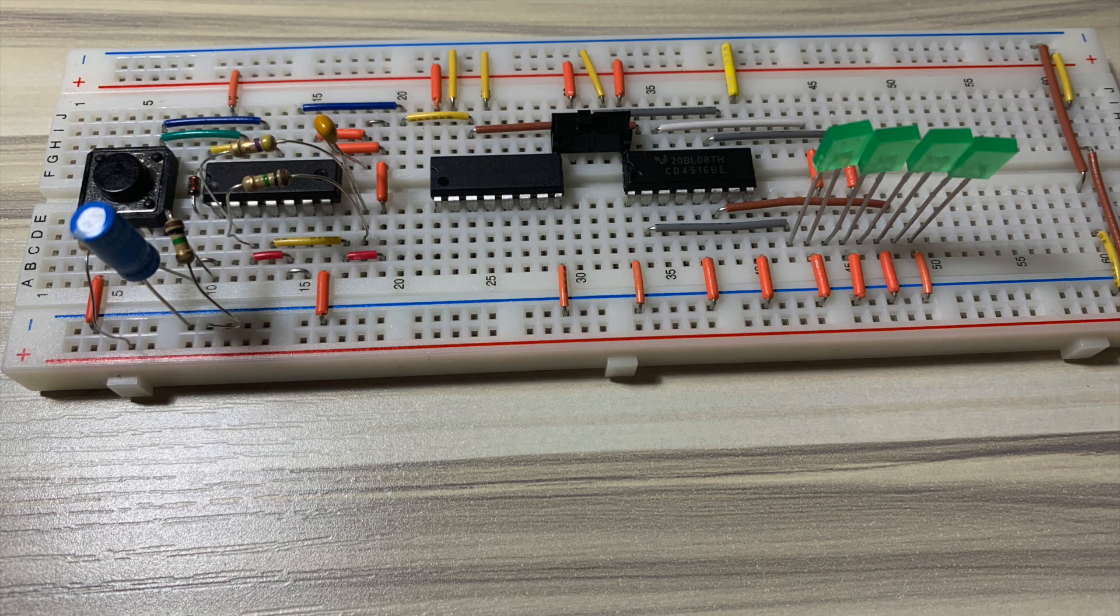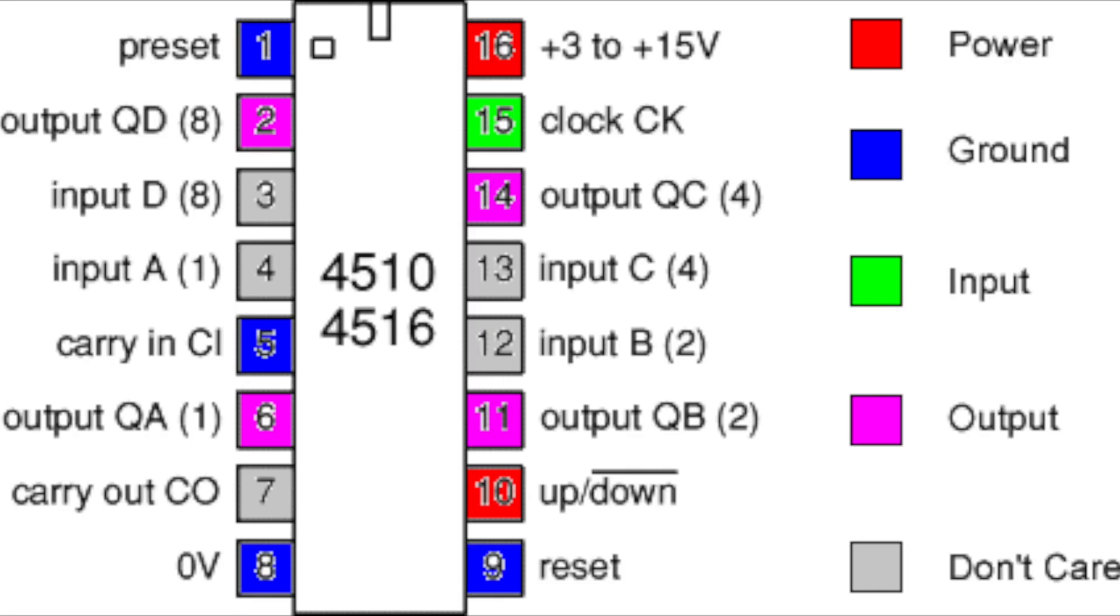This is the decimal counting binary up/down counter. The CMOS 4510/4516, similar to the 4017 decade counter, accepts the input as the clock signal and counts the pulses. The difference between them is how the clock pulses are counted. The 4510/4516 counts in 4-bit BCD format. The 4510 counts from 0 to 9 while the 4516 counts from 0 to 15.